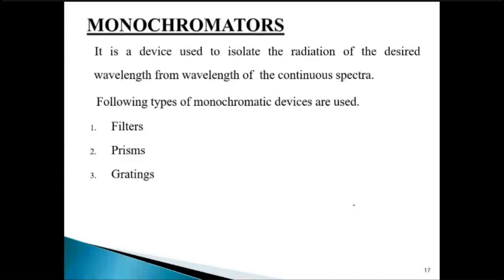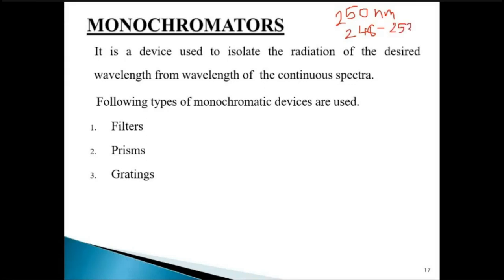A monochromator is a device used to isolate radiation of the desired wavelength from a continuous spectrum. The source produces continuous spectra, but for analysis you require only a few wavelengths. A single wavelength is difficult to isolate — if you want 250 nanometers, the monochromator will give you a range of approximately 248 to 252 nanometers. Although it is called a monochromator, it is extremely hard to obtain a truly single wavelength.